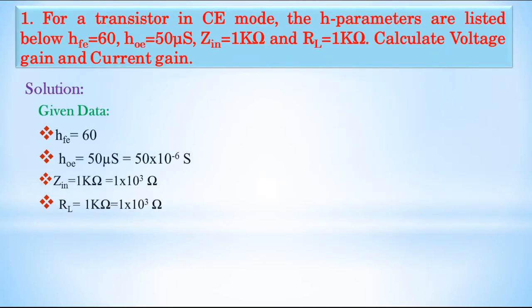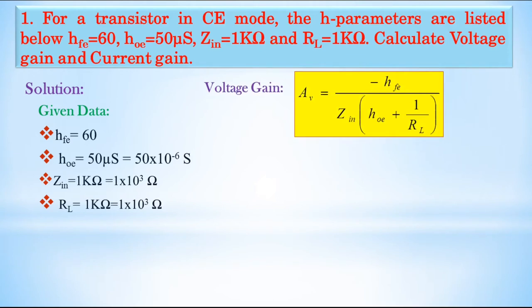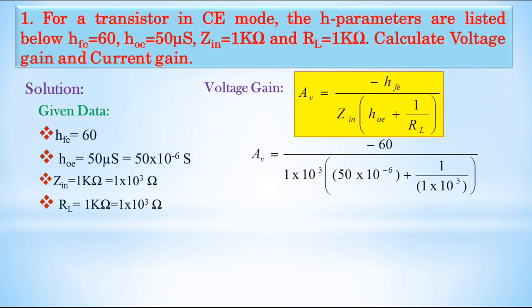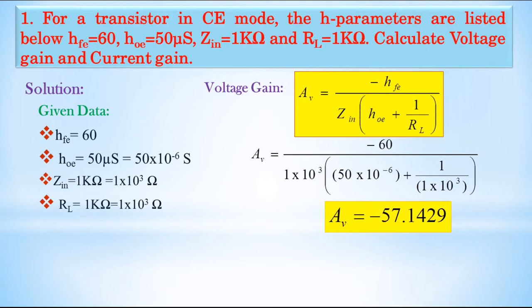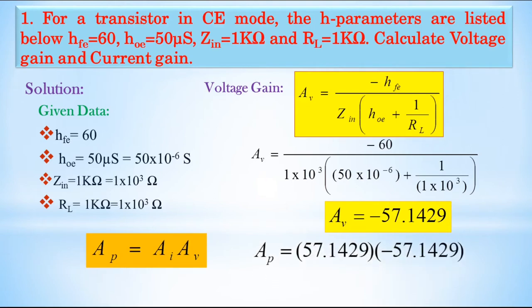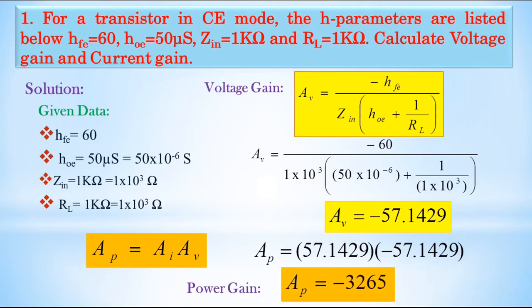Next, we calculate voltage gain. AV = −HFE / (Zin × (HOE + 1/RL)) = −60 / (1 × 10³ × (50 × 10⁻⁶ + 1/(1 × 10³))). This gives AV = −57.1429. Since we have both voltage gain and current gain, we can calculate power gain: AP = AI × AV = 57.1429 × (−57.1429) = −3265.